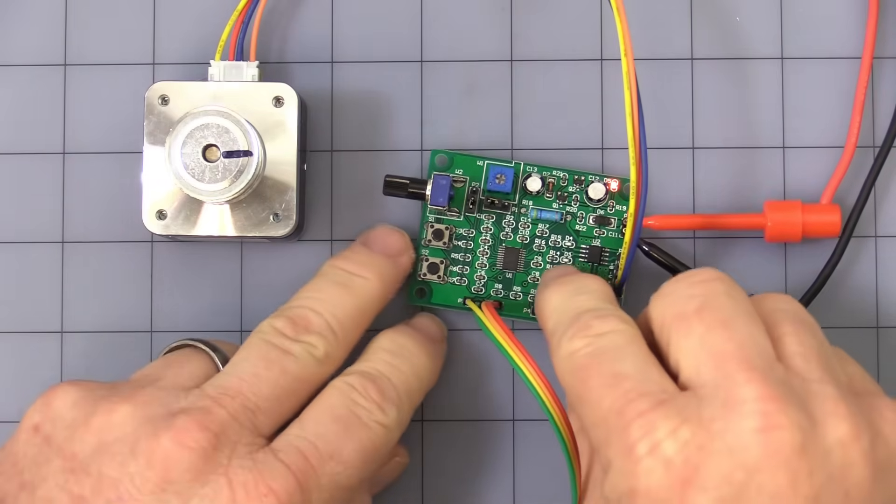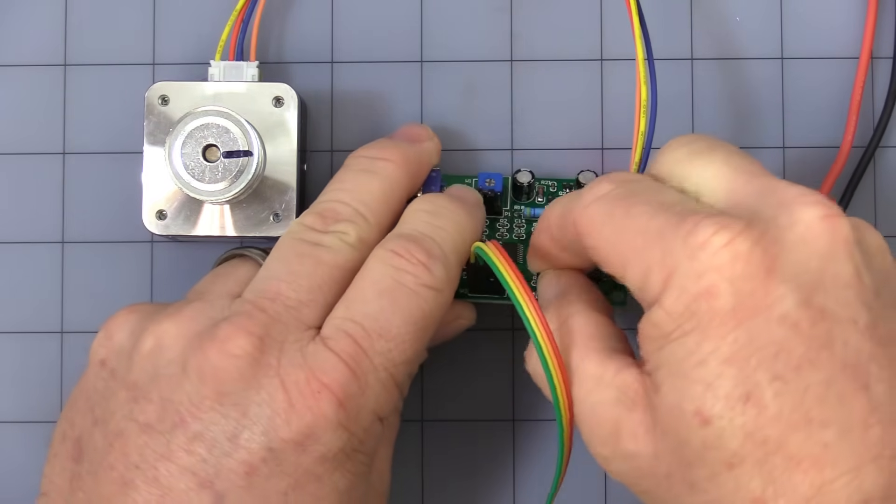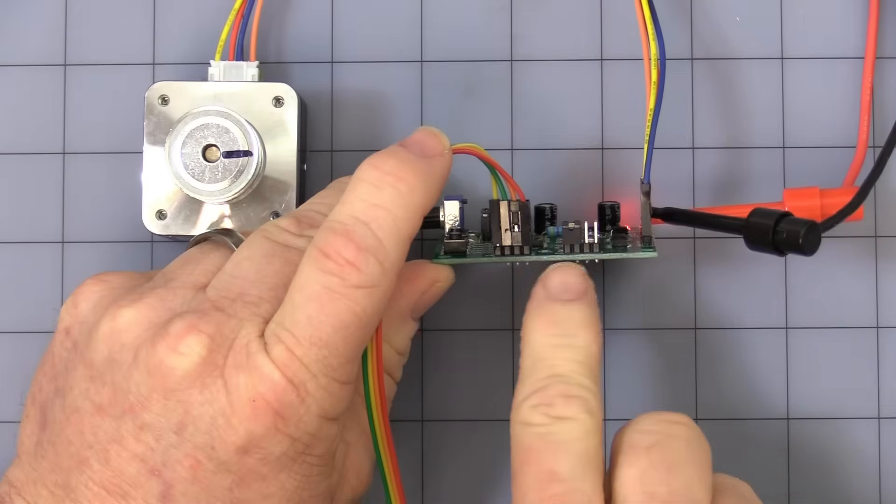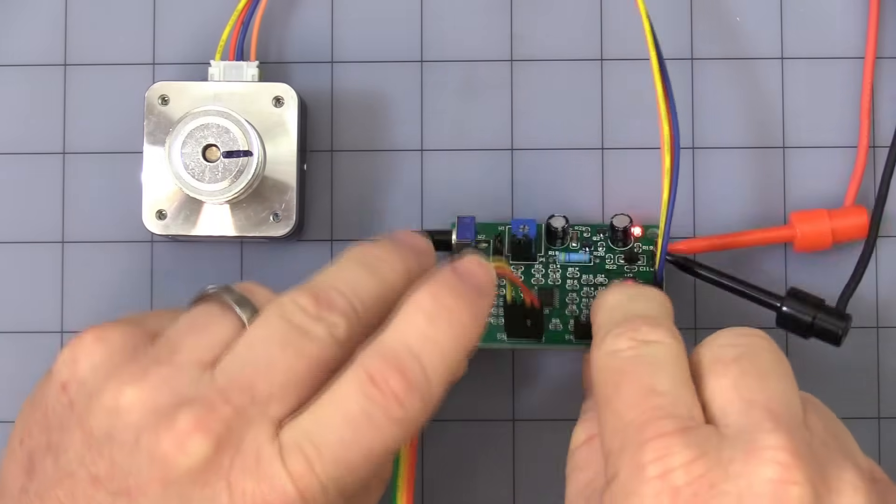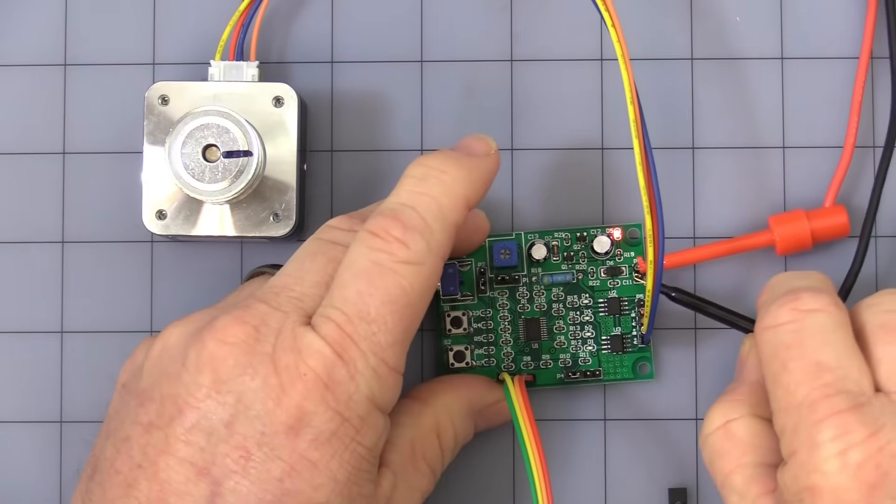Let's go to program three, which is called the jog mode. Now you move the jumper over to two. The left side and the two on the right side are now open. Once again, you got to remove power. Add power back.